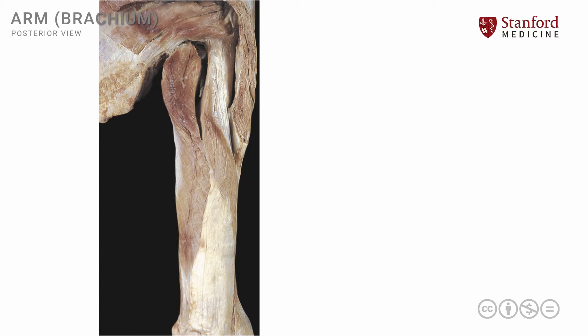Let's look at the posterior arm in a photograph where the dissection has been completed. In this photograph, we note that the deltoid muscle is seen here, which has been cut on its surface in order to expose some of the deeper structures. The posterior fibers of the deltoid have been removed from this area. The first structure we can see is the long head of the triceps — and remember, this is the only head of the triceps that has a scapular attachment. The other visible part of the triceps is the lateral head of the triceps, seen here.